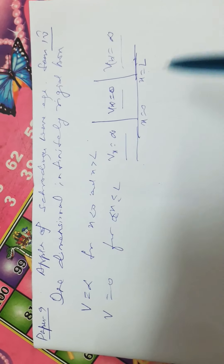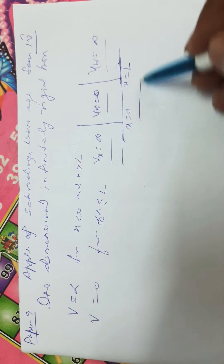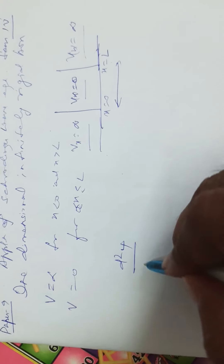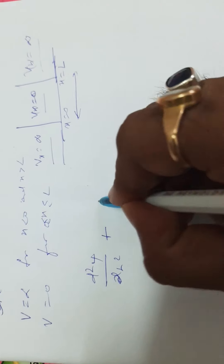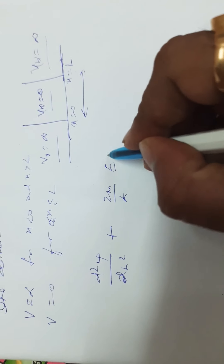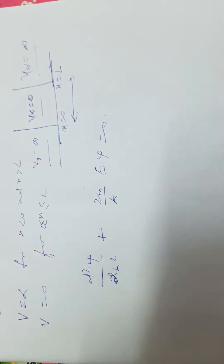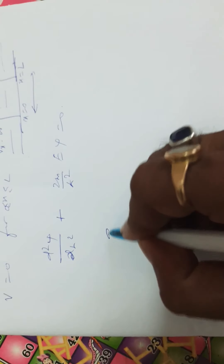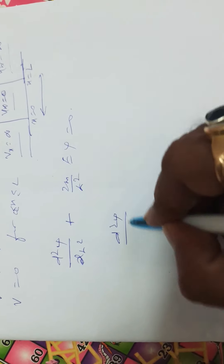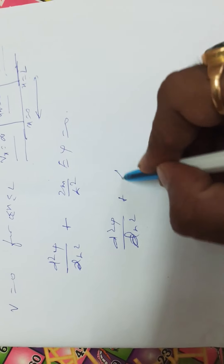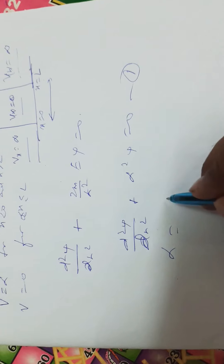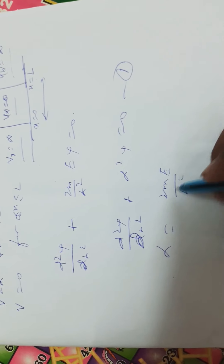So this is how we define it. The Schrödinger equation within the box, in this region, can be written as d²ψ/dx² plus (2m/ℏ²)Eψ equal to 0.